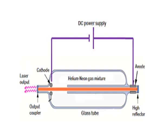Here is the figure of the helium-neon gas laser. You can see a glass tube filled with helium-neon gas, with a high reflector mirror at one end and a partially reflector mirror at the other end, which gives the laser output. The flash tube gives energy by means of current electricity, as shown in the circuit diagram.